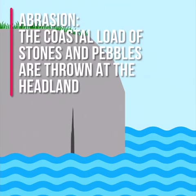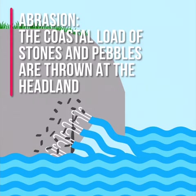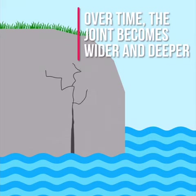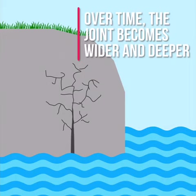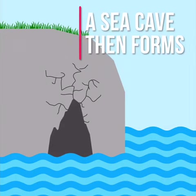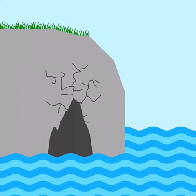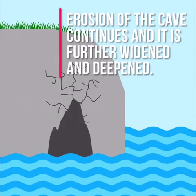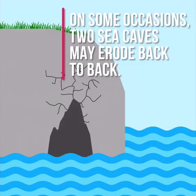Abrasion also erodes the coastline as the coastal load of stones and pebbles are thrown at the headland by the waves. Over time this leads to fracturing as the joint becomes wider and deeper. A sea cave may then form. Erosion of the cave continues and it is further widened and deepened. On some occasions two sea caves may erode back to back.